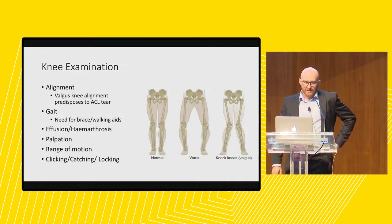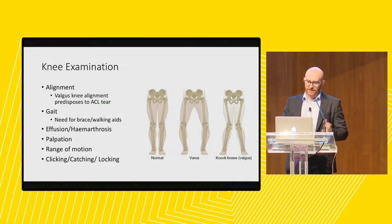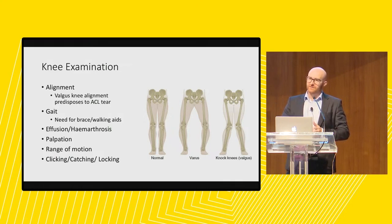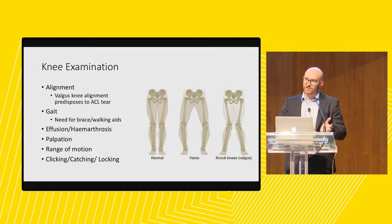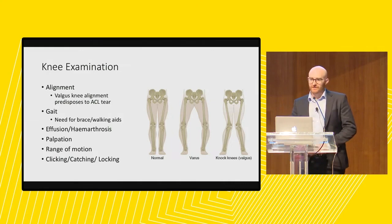Moving on to knee examination, we want to know their overall alignment — is it neutral, varus or valgus? We know valgus knee alignment predisposes to ACL injuries. We want to know when they walk into the office whether they're braced or need walking aids such as crutches. Do they have a large effusion, haemarthrosis consistent with the injury? On palpation, we're going to feel all the significant bony and soft tissue structures, particularly around the anterolateral ligament insertion, and around the MCL and joint line.